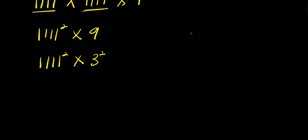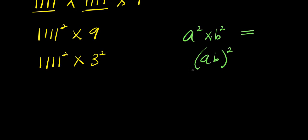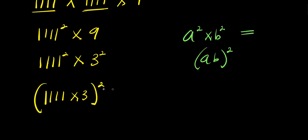Now, using the rule that a² times b² equals (a times b)², we have (1111 times 3)², which is 3333². So right now I need to multiply this out.